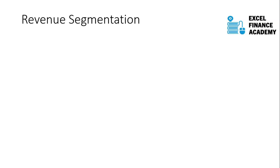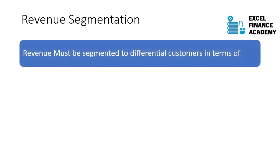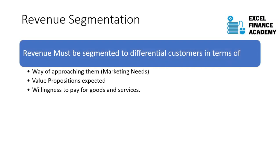If you are a corporate client, the hotel doesn't sell at the online rate — there's a contract rate. If you buy 10 rooms in bulk, you pay much less than an individual booking. So corporate clients are a different customer segment. The hotel wants to understand how its business is coming in: directly, via travel agents, via corporate contracts, or via group bookings.